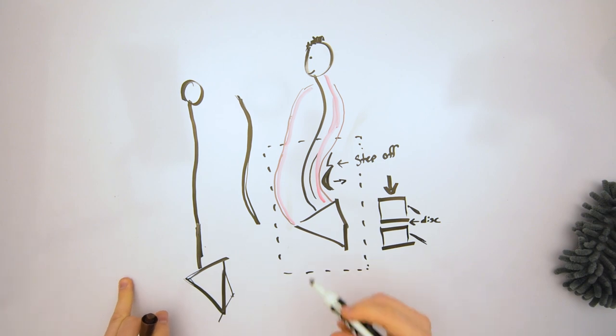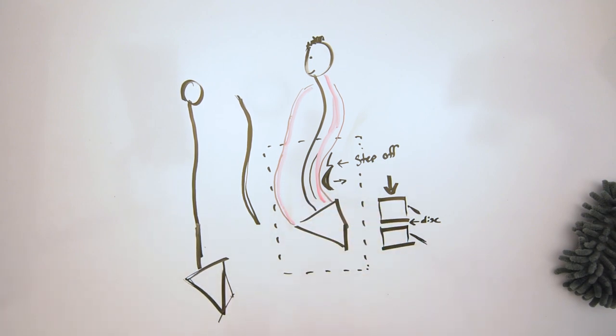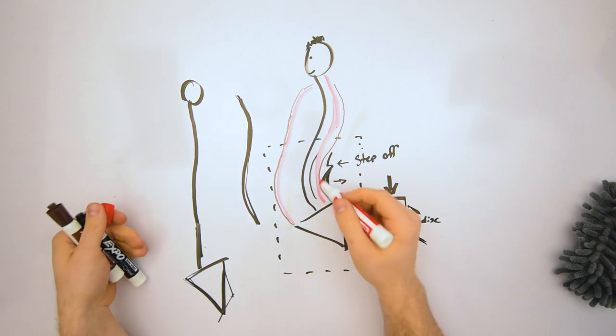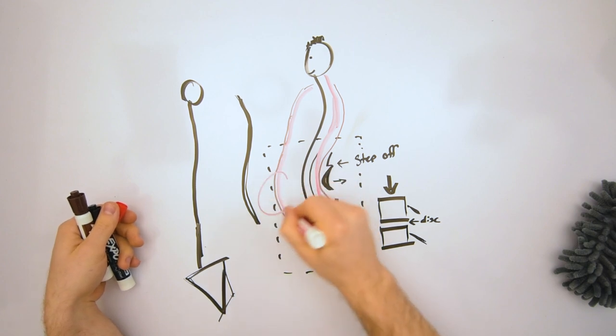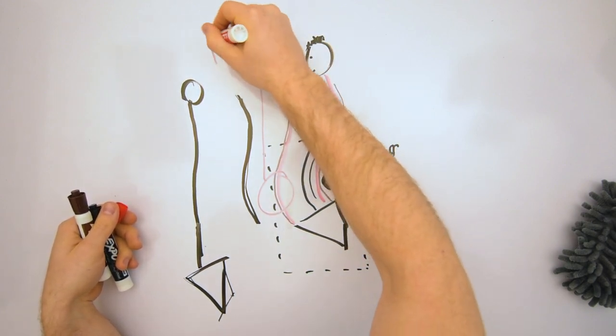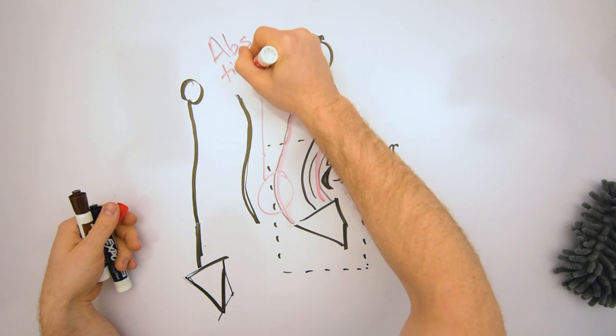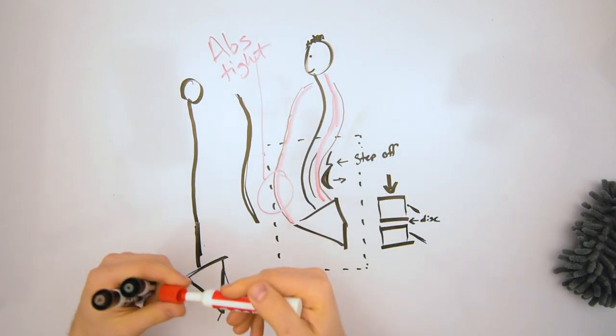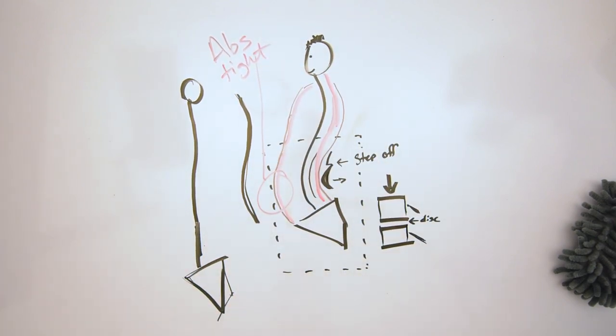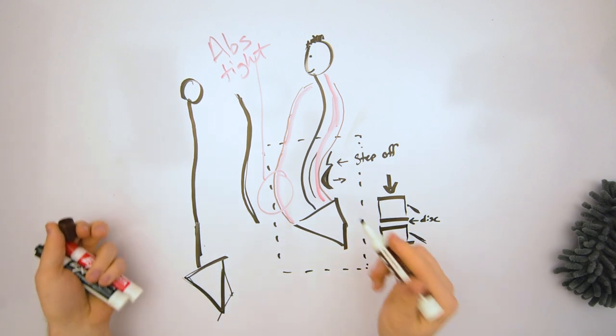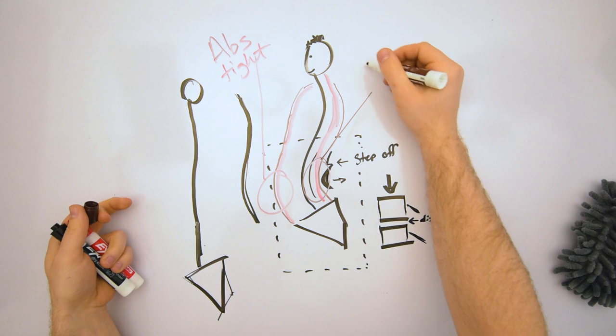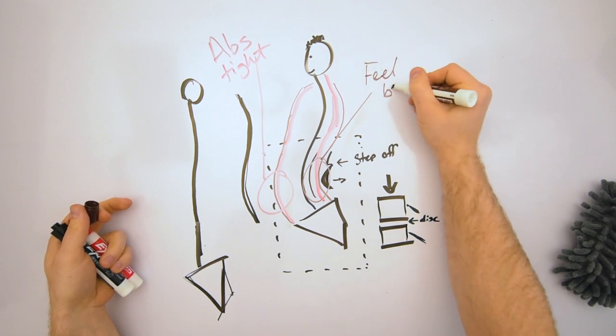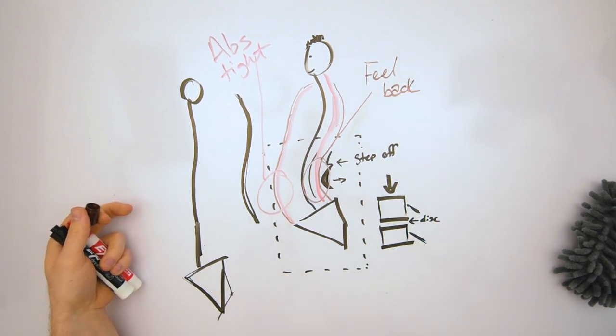Okay, and so what we're going to do is we're going to make these abdominal muscles tighter, we're going to make this, let's do this here, abs tight, and we're going to use something else, too. We're going to use the skin in the back. Feel back.